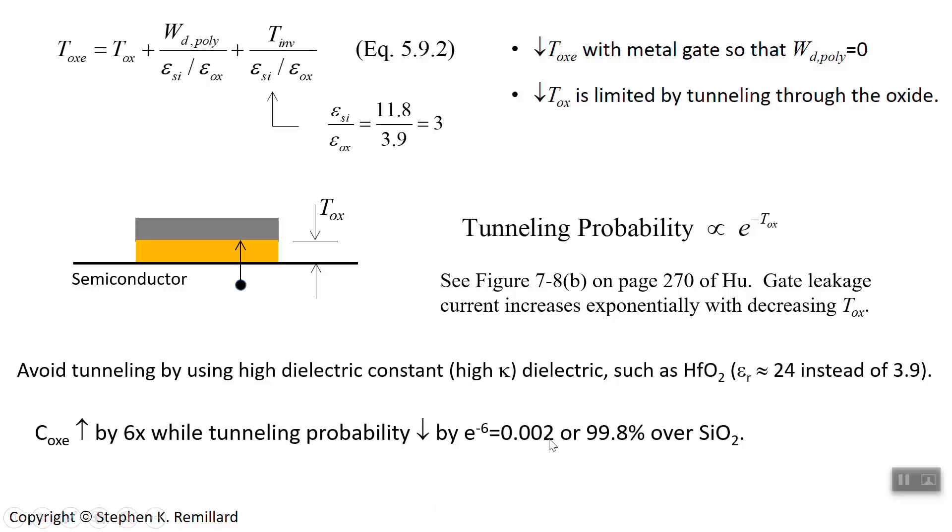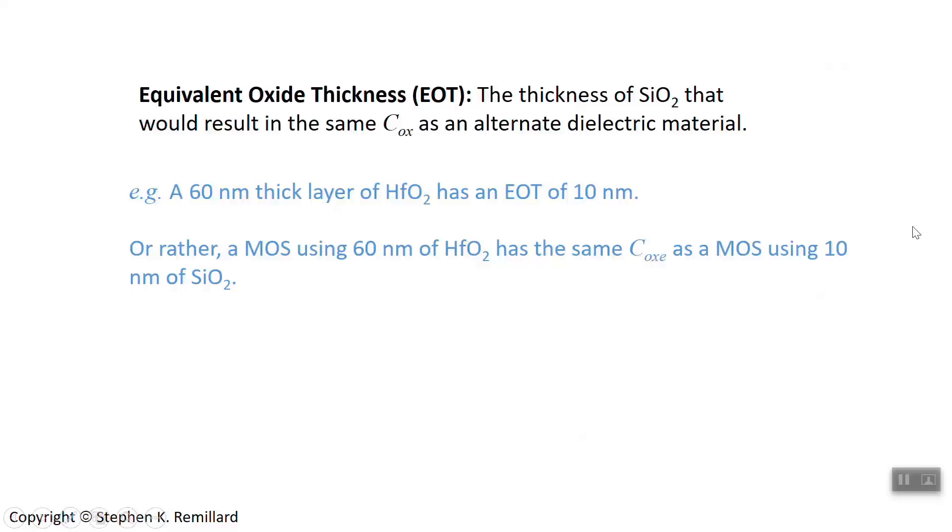This brings up a new term: Equivalent Oxide Thickness (EOT) is a measure of how thick it would be if it were silicon.